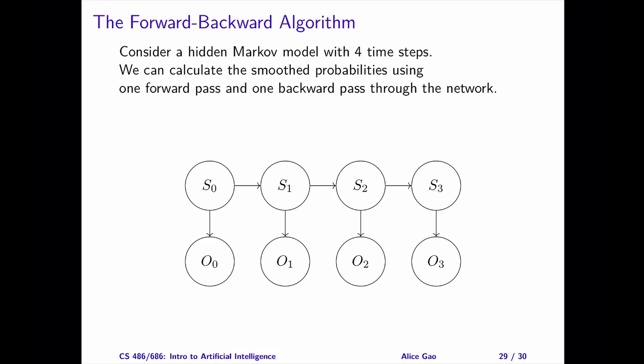The purpose of the forward-backward algorithm is to calculate the smooth probability at each time step. For our model, we want to calculate these four probabilities.